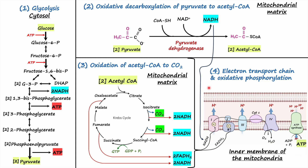One important thing to remember is that NADH used in the electron transport chain is generated in the mitochondrial matrix. However, NADH is also generated in the cytosol through glycolysis, but the biggest problem is that NADH simply cannot cross the mitochondrial membrane to be oxidized and synthesize ATP. So the question is: what happens to the cytosolic NADH, and how is it oxidized to synthesize ATP in the mitochondria?